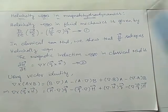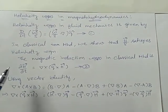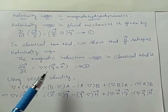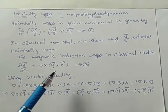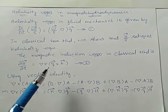What is our magnetic induction equation? del H by del t equals del cross q cross H in classical MHD because the mu term is zero.